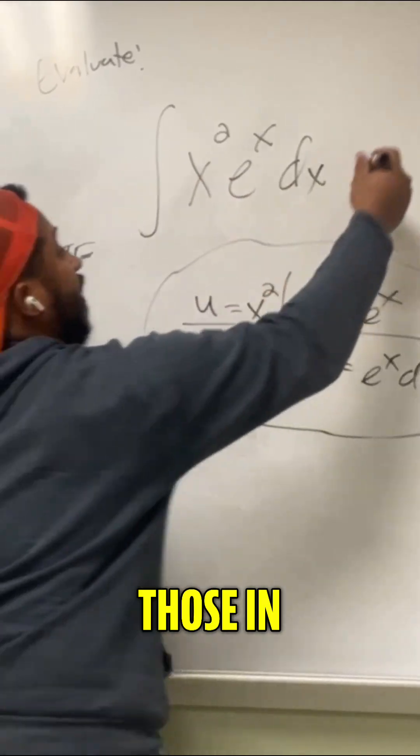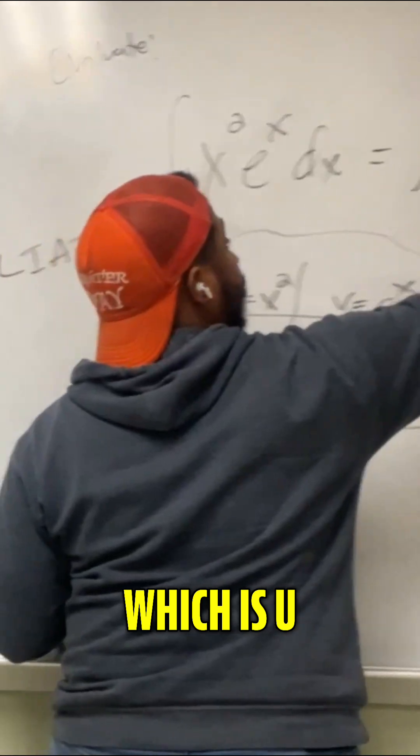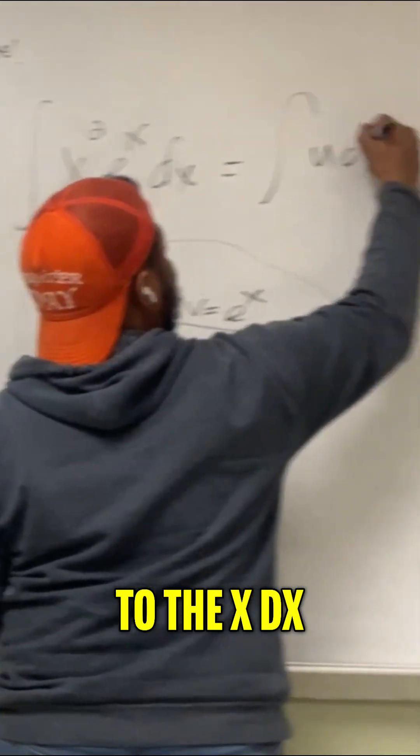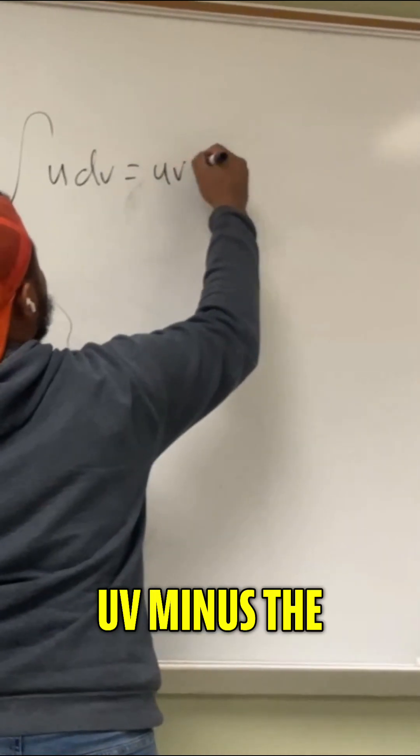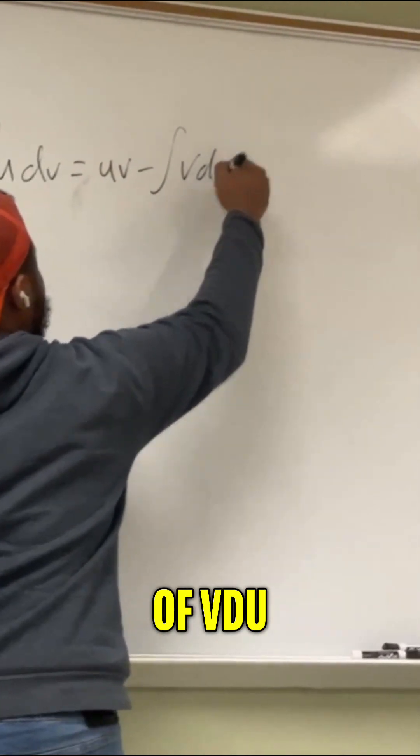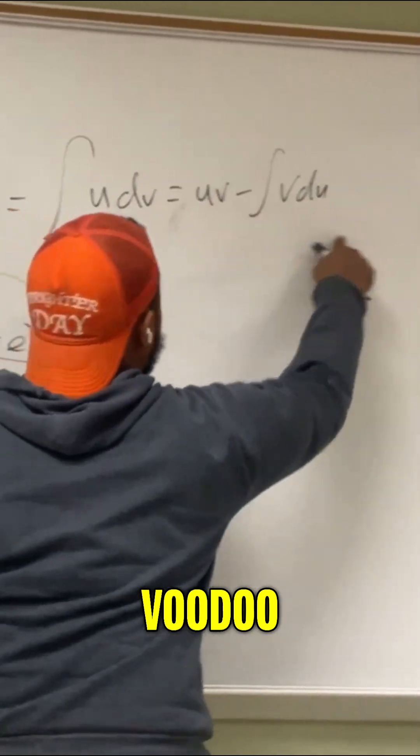So substituting those in, we get this is the integral of our x squared, which is u, and then our e to the x dx, which is dv. And the integral of u dv by parts is uv minus the integral of v du. In other words, ultraviolet voodoo, ultraviolet voodoo.